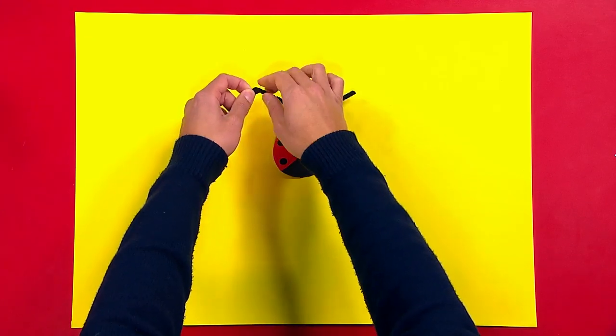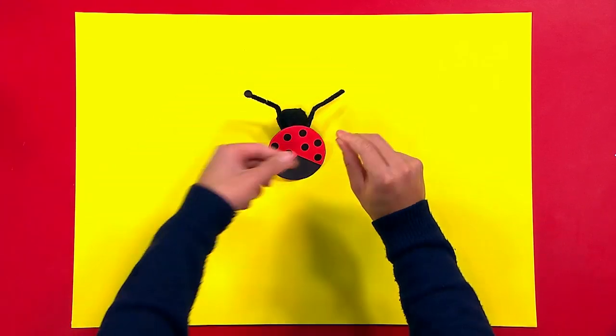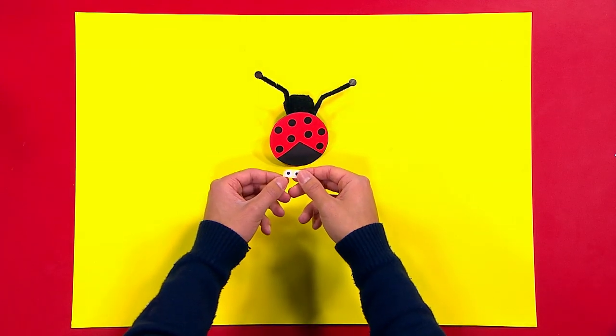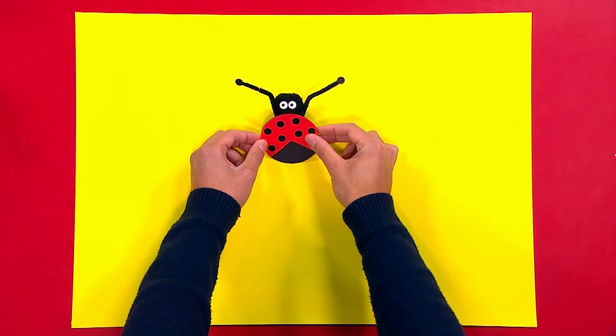Then add some black stickers at the top. Finally, add white stickers to the pom pom for your ladybird's eyes.